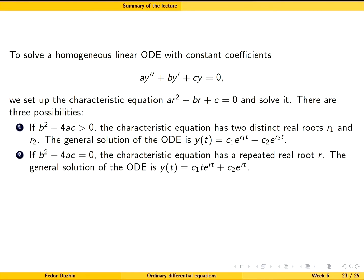If the discriminant is zero, it means that the characteristic equation has a repeated root. It appears in the exponent, but also the second solution is t times the same exponential function.